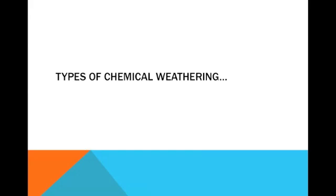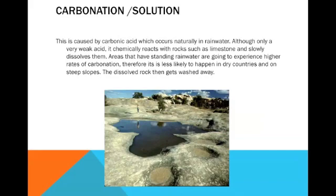There are different types of chemical weathering. Firstly, we've got carbonation, sometimes called solution. This is basically caused by carbonic acid, which occurs naturally in rainwater. Although only a very weak acid, it chemically reacts with rocks such as limestone and slowly dissolves them. Areas that have standing rainwater are going to experience higher rates of carbonation. Therefore, it is less likely to happen in dry countries and on steep slopes. The dissolved rock then gets washed away. Rainwater comes down and the carbonic acid in it dissolves away rocks such as limestone.